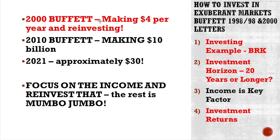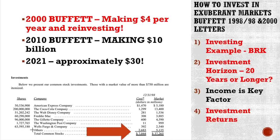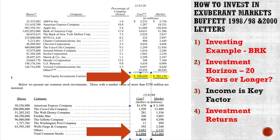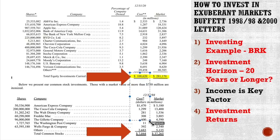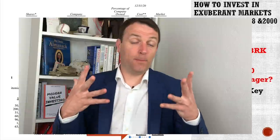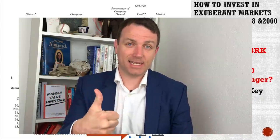To summarize: Buffett in 2000 was making about $4 billion per year and reinvesting. By 2010, his businesses compounded to $10 billion. By 2021, he's now making $30 billion. This is compounding — focus on the income and you'll have more and more to invest every year. Everything else, like stock market news and macro, is just noise. He was at $7 billion invested and now he's at $108 billion — mostly because of interest rates, but he would still have been great Warren Buffett. I hope I've given you a lot of value with this video. Please click that like button and consider subscribing.